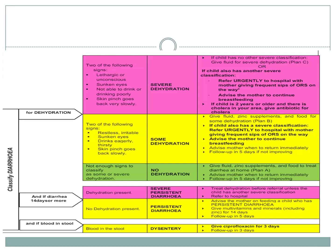Pink indicates severe dehydration, defined by two or more of the following signs: the child is lethargic or unconscious, has sunken eyes, is not able to drink because of severe dehydration and lethargy, and the skin pinch goes back very slowly, more than 2 seconds. The treatment is Plan C, in which intravenous dextrose solution is provided. If IV access is not available, a nasogastric tube is inserted for fluids and the child is immediately referred. If the child is 2 years or older with cholera, antibiotic for cholera is given.